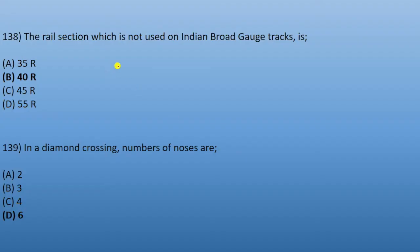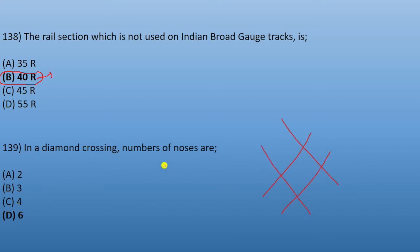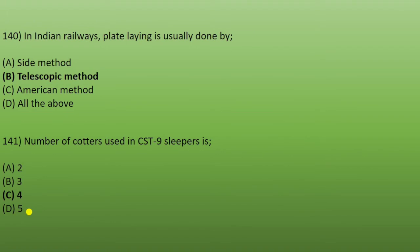Next: the rail section not used on the Indian Broad Gauge track is 40R. Next: in a diamond crossing, the number of noses is 6. Next: in Indian Railways, the rail laying is usually done by the telescoping method.